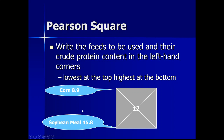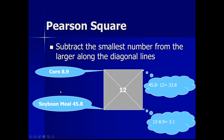One important condition: one ingredient must have a protein value less than the required amount and the other must be higher. Now for calculations, subtract diagonally. Subtract the required protein value from each ingredient's protein value in a diagonal direction. So 12% minus 8.9% gives 3.1%, and 45.8% minus 12% gives 33.8%.